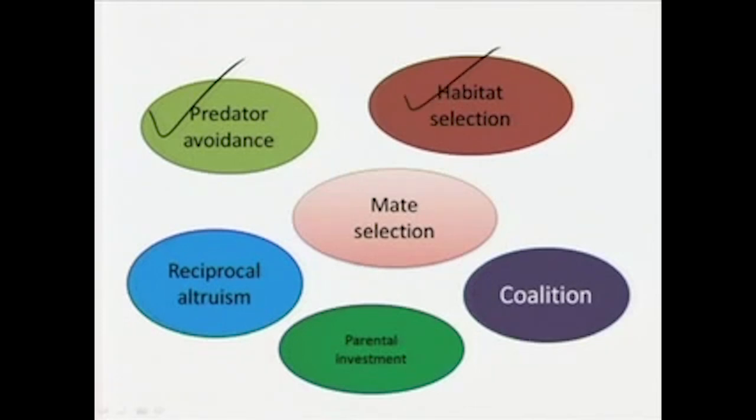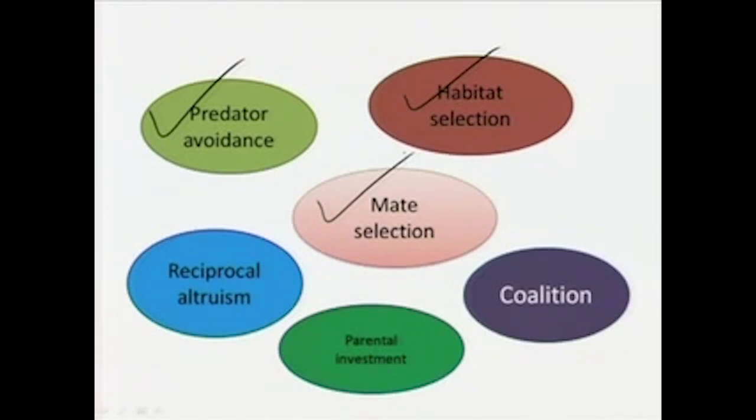Habitat selection is something that was done in the past and is something that is done both individually and collectively by human beings. The selection of habitat is immensely important — it has to be conducive to the survival, growth, and development of a particular community. Next, mate selection — important for one of the two pillars of evolutionary theory, which is reproduction, survival being the other pillar. Mate selection has come to us from the past and has remained with us as a fundamental characteristic.